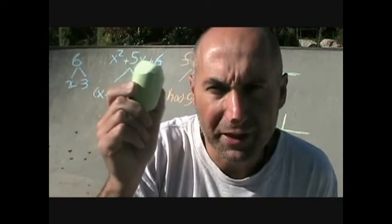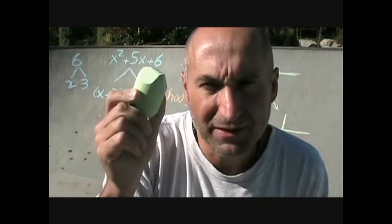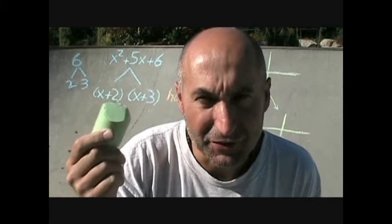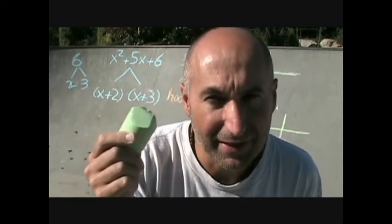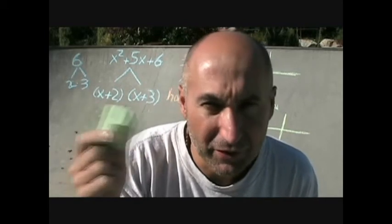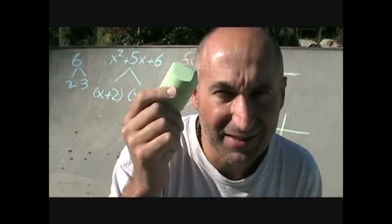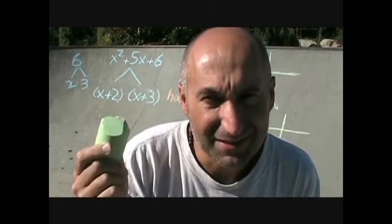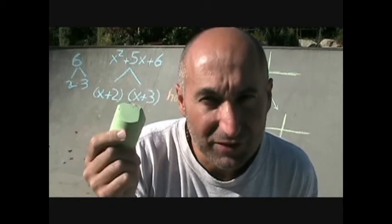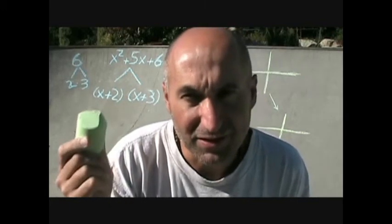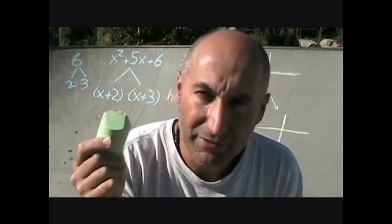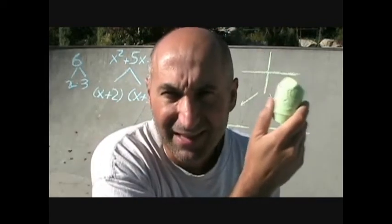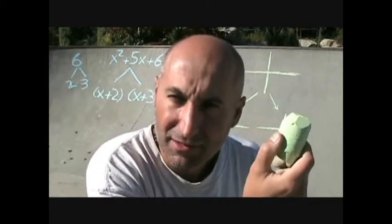Our polynomial x squared plus five x plus six is a parabola, and its x-intercepts are x equals negative two and x equals negative three. When you factor this and set it equal to zero, all you're doing is finding the x-intercepts. You set each factor equal to zero and solve, giving you x equals negative two and x equals negative three. It's a parabola that crosses the x-axis at those two points.